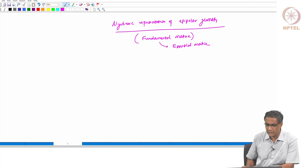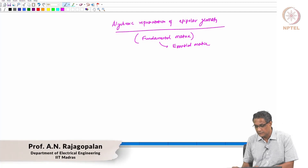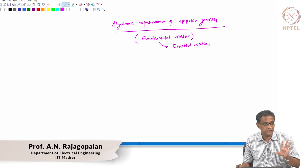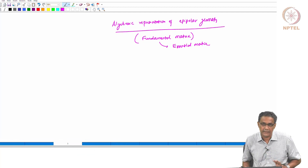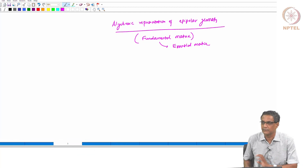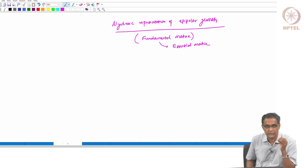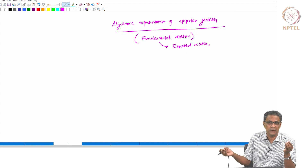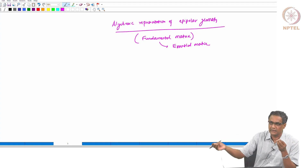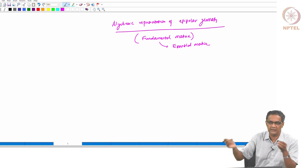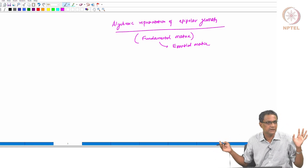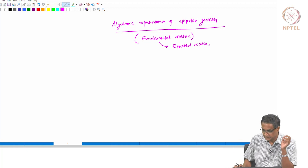Whenever somebody talks about stereo, let me also mention the multi-view case — what you call structure from motion. All these things simply carry on there, so most of the work that we do here we will simply utilize there. There will only be certain subtle changes. The reason for doing stereo first is that all the things we do here carry over there because finally everything is about: you take a camera, you move — it is like one point moving to another. What R and T do you have? What is the relation and how do you relate the image point? It comes back to the same thing again and again.